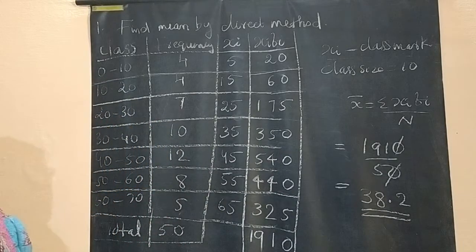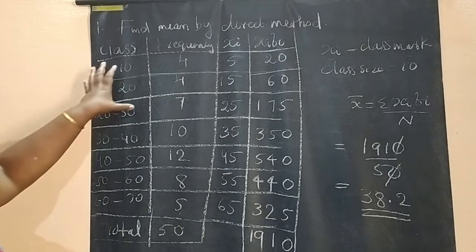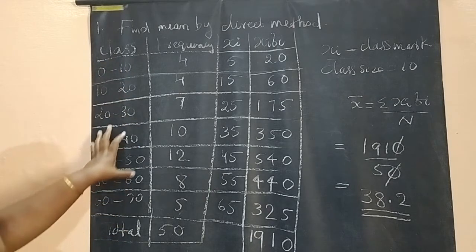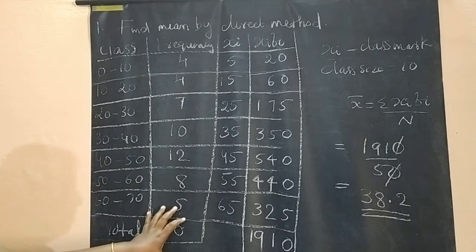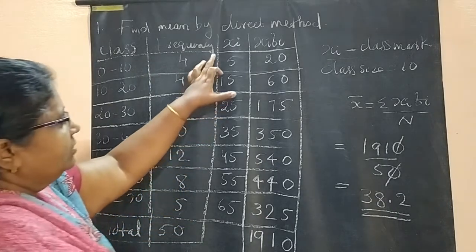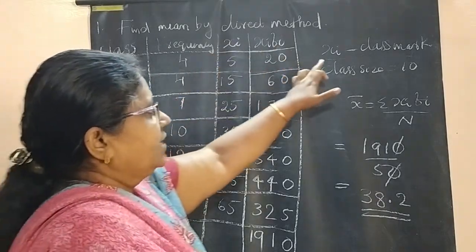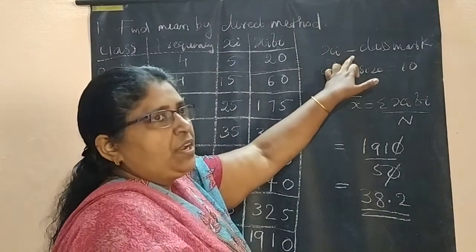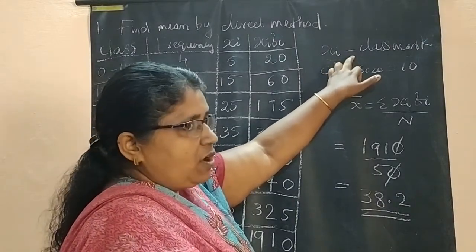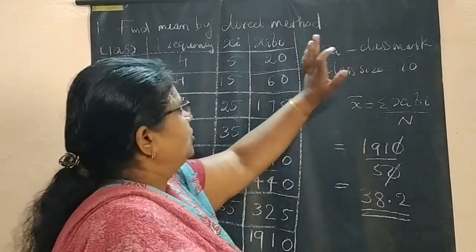This method is called direct method. In direct method you will get the class interval or class column and frequency column. You have to prepare the third column xi. Xi means class mark, definition of class mark is (lower limit + upper limit) / 2.